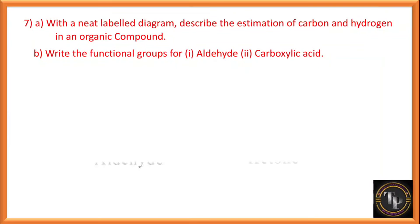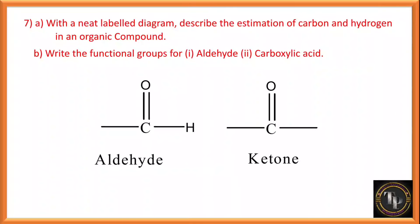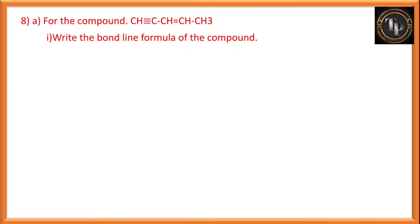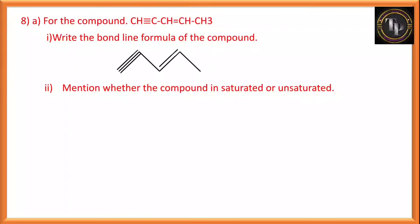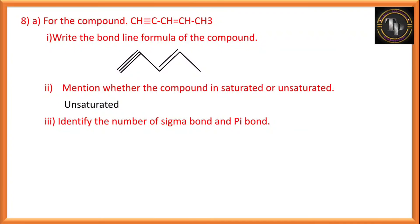Write the functional group for aldehyde and carboxylic acid. Aldehyde: C double bond O with one H on one side. Ketone: C double bond O with carbon chains on both sides. For the given compound, write the bond line formula showing carbon atoms with dots — the compound has five carbon atoms shown with five dots, with a triple bond and double bond indicated. Identify sigma and pi bonds: six C-H sigma bonds; four C-C sigma bonds including one from the triple bond; total ten sigma bonds. Pi bonds: one from the double bond plus two from the triple bond gives three pi bonds total. Since at least one double or triple bond is present, the compound is unsaturated.